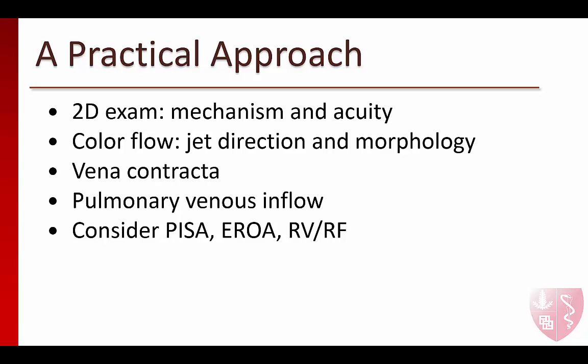We just presented all of these methods for evaluating MR, but what do we actually use on a routine basis with real patients? A practical approach is to work through the evaluation in this sequence: start with a 2D exam to help determine the mechanism and acuity of the MR. Next, place color flow over the valve to assess jet direction and morphology. Then measure the vena contracta and assess pulmonary venous inflow. If further evaluation is needed, you could also consider measuring the PISA, EROA, regurgitant volume, and regurgitant fraction.